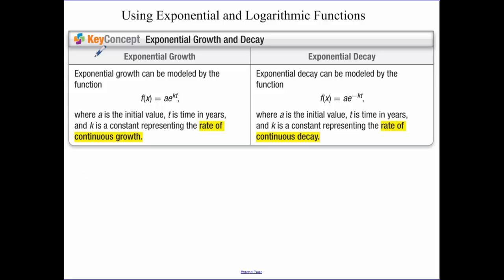So exponential growth. You talk about bacteria and things like that growing in science class. An exponential growth function can be modeled as f(t) = ae^(kt). So our t is our variable, k is going to be our constant, and that's called the rate of growth.